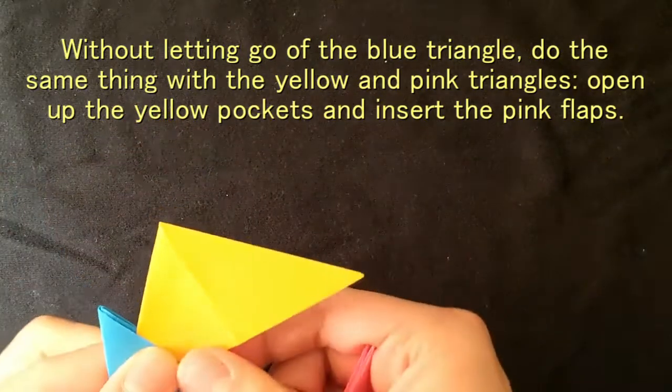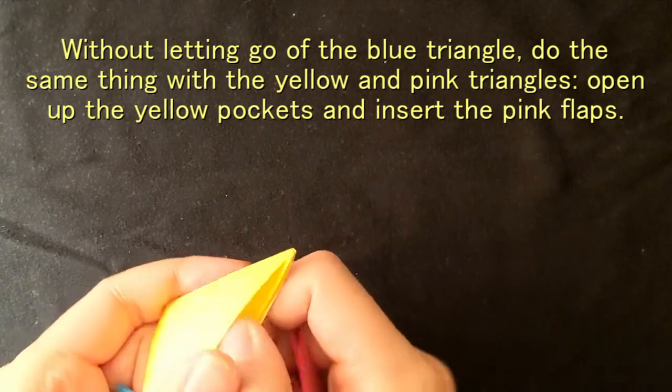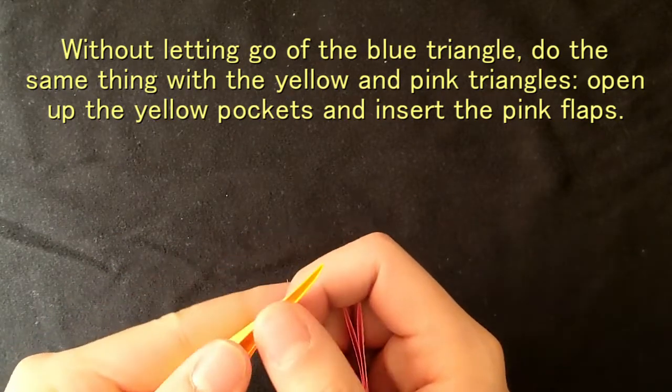Without letting go of the blue triangle, do the same thing with the yellow and pink triangles. Open up the yellow pockets and insert the pink flaps.